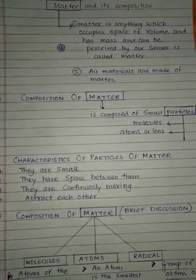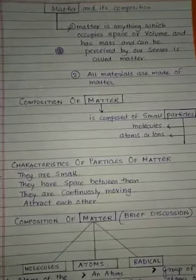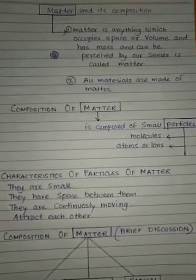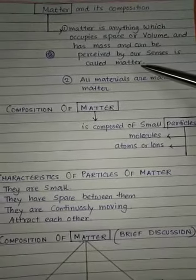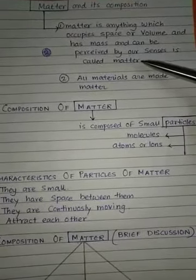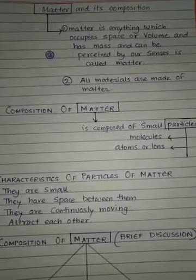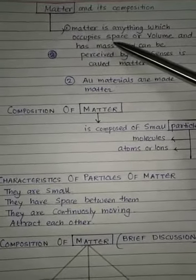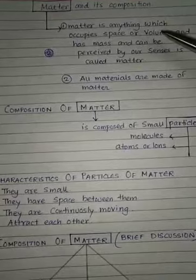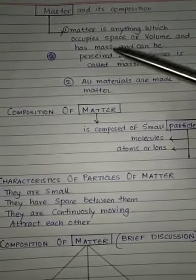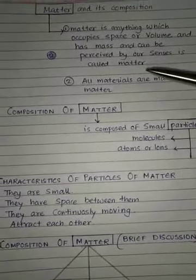So what is matter? Matter is anything which occupies space or volume and has mass, and can be perceived by your senses — it is called matter. Whenever we talk about matter, three things should come to mind: it should occupy space, it should have volume, and it should have mass. All materials are made up of matter.